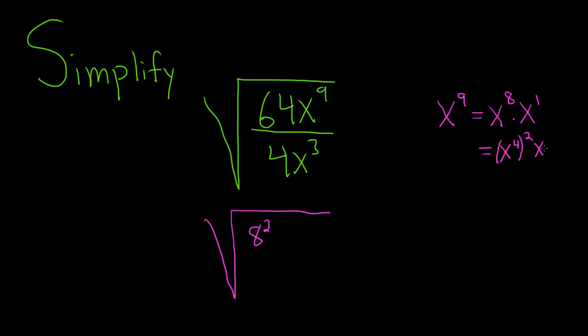And then we have x to the 1. So let's go ahead and do that here in the problem. So this will become x to the 4th squared times x to the 1.